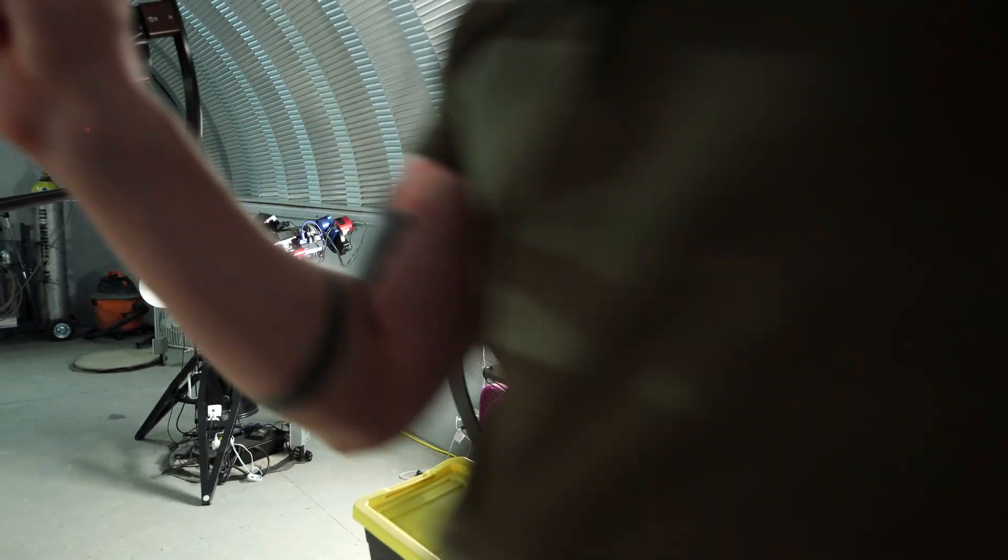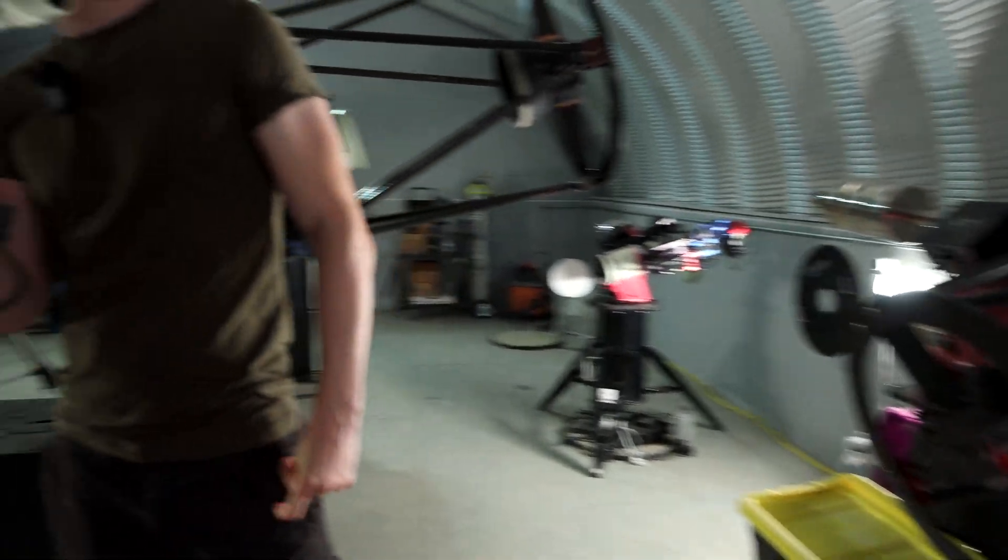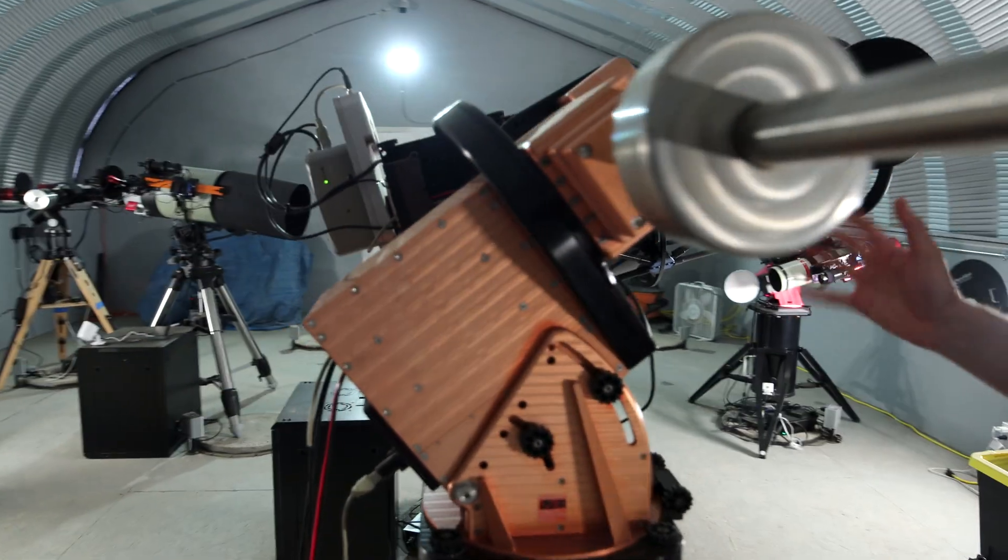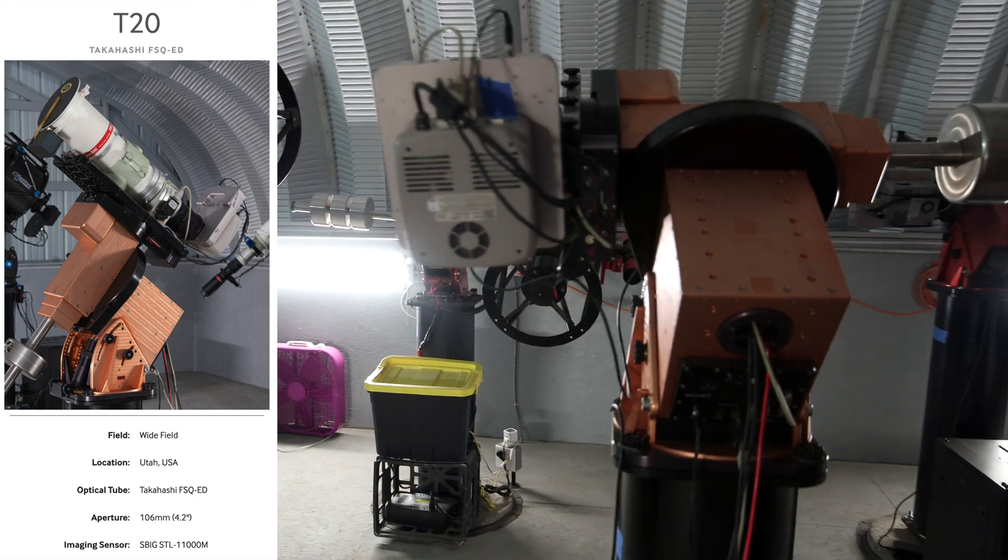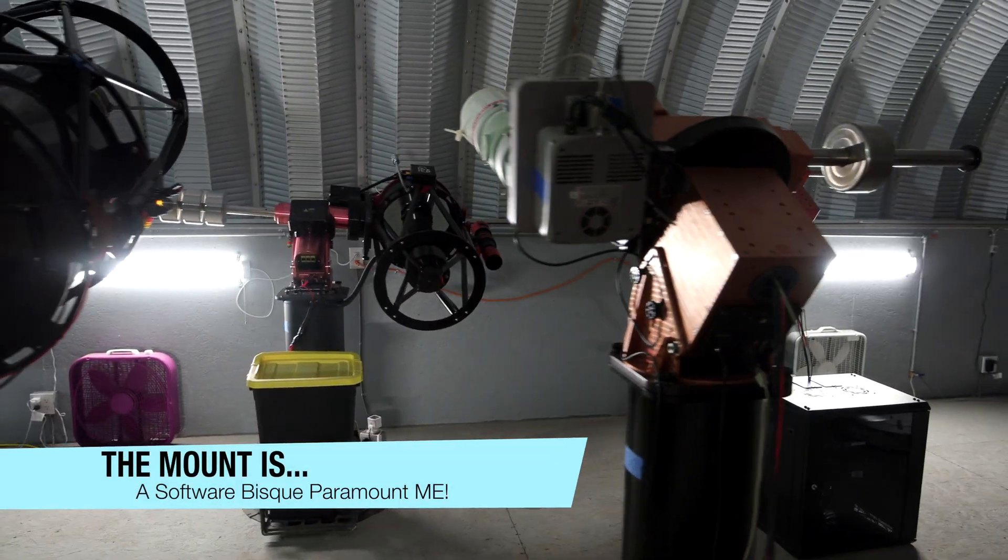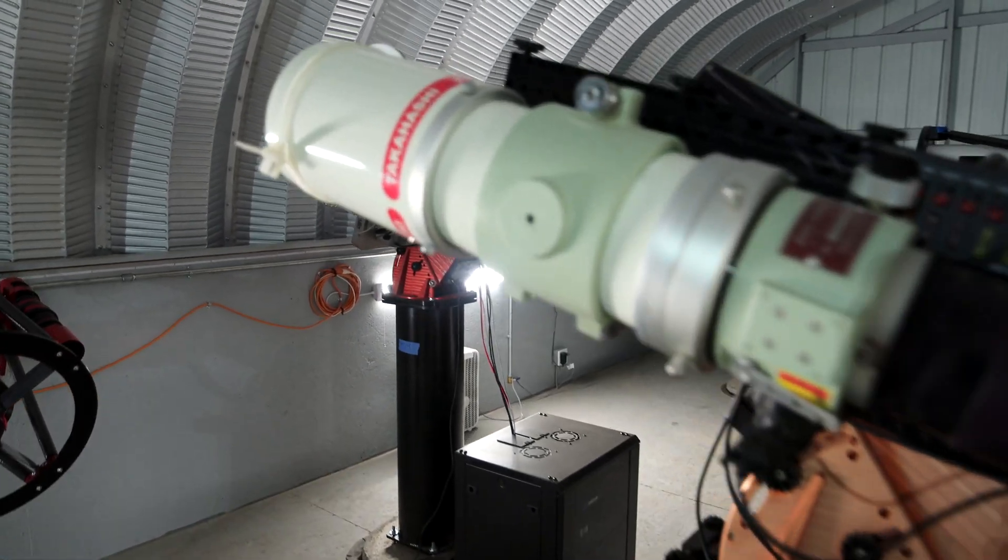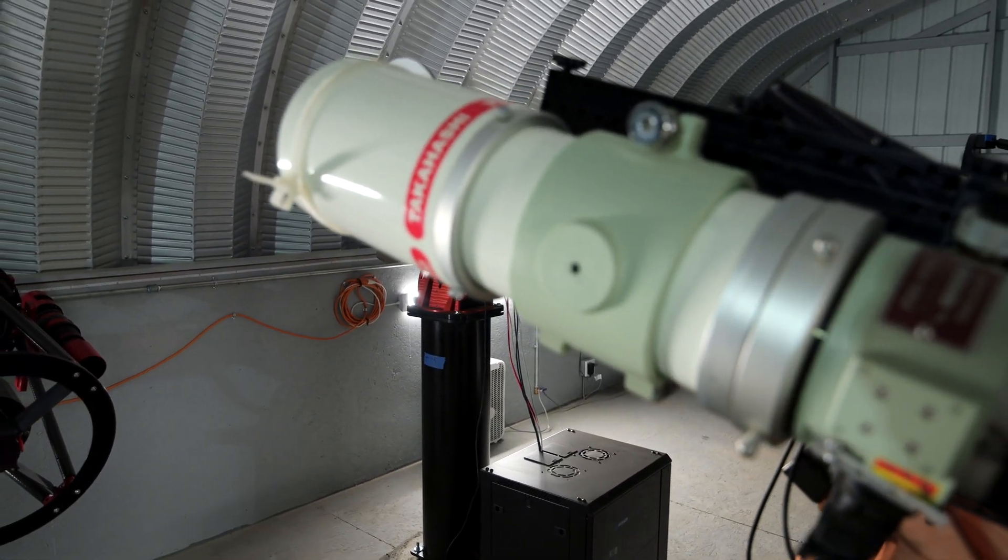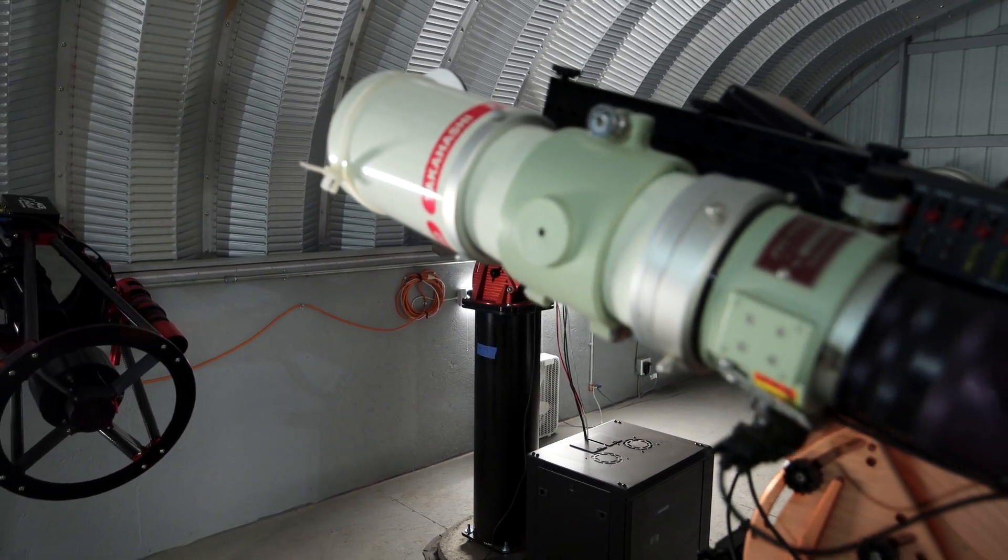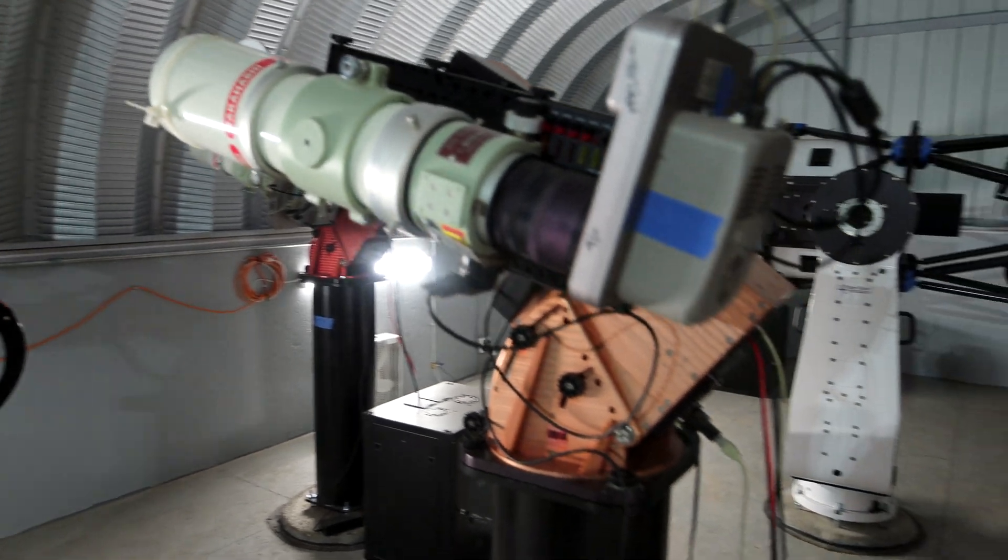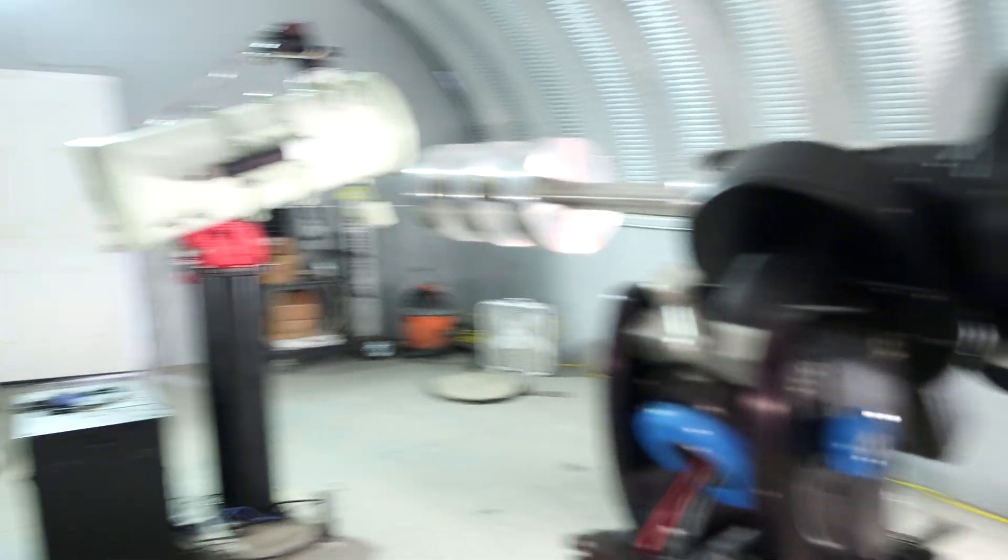And then right behind you there is another Takahashi telescope. This seems to be an FSQ-106 and this weird mount which I have no idea what mount this is. I'll have to ask Craig, the owner of this observatory, which mount this is. And you can see here a 50D camera at the back with those big vent holes here. And if you look right behind you, Dahlia, you will see a huge telescope right where I am.